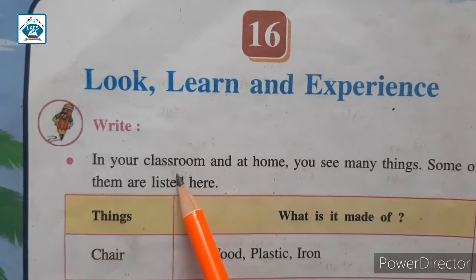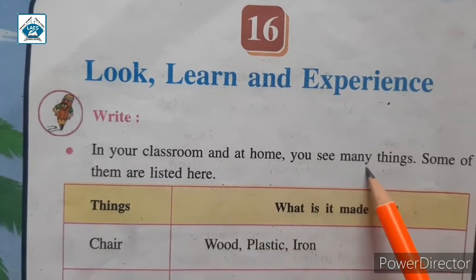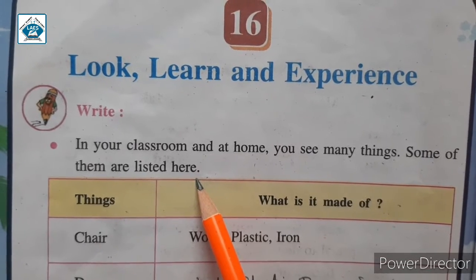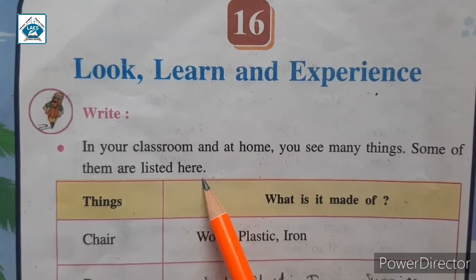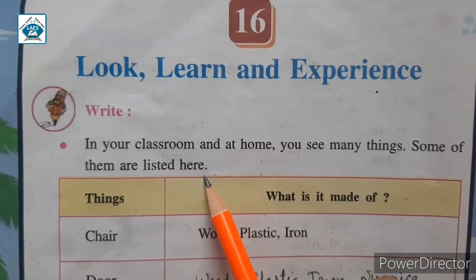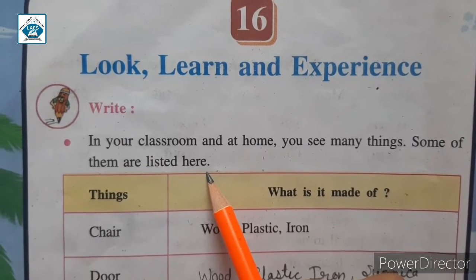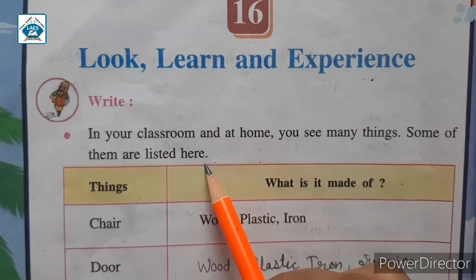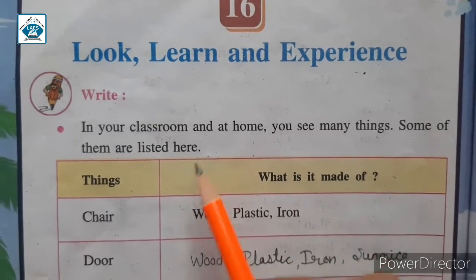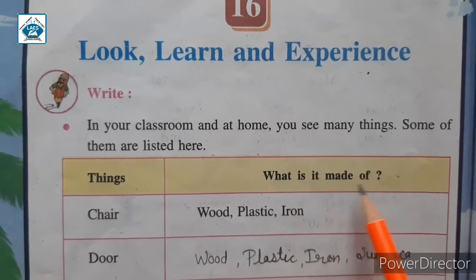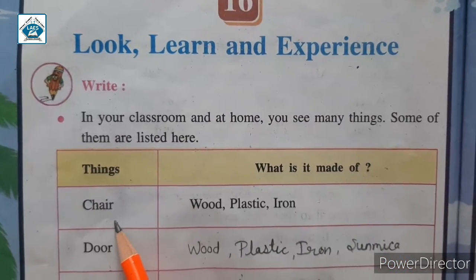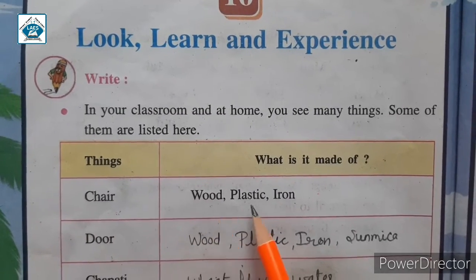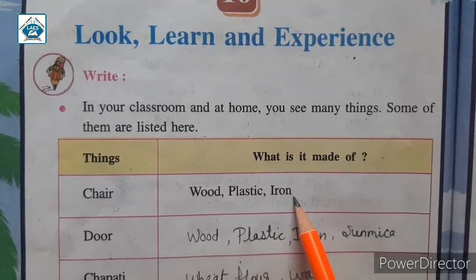Now, in your classroom and at home you see many things. Some of them are listed here. We have to find out what these things are made of. First is chair - a chair is made of wood, plastic, iron, and sunmica.